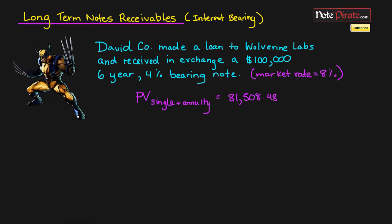The discount is going to be amortized over six years. We'll go about figuring out how to amortize that discount by looking at an amortization table and going through it step by step.